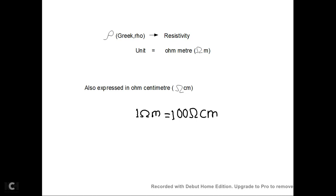1 ohm centimeter is equal to 0.01 ohm meter. Now we are going to talk about conductance.